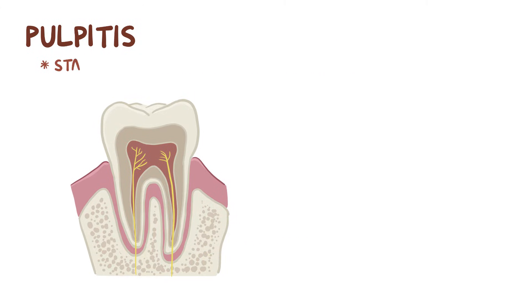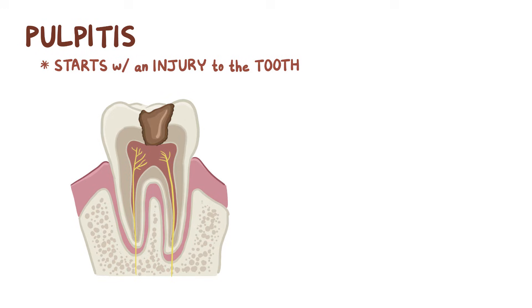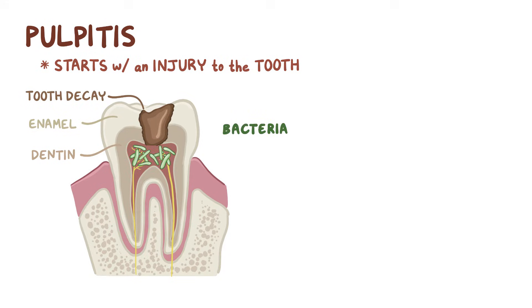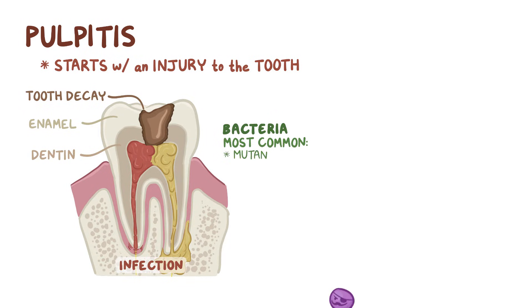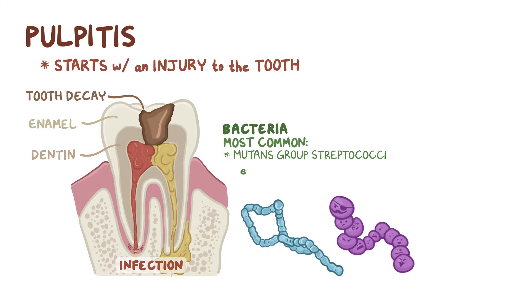Pulpitis usually starts with either an injury to the tooth, such as a fracture, or commonly from tooth decay, which is when there's erosion of the overlying enamel and dentin layers, opening up a direct route to the pulp. Bacteria can then access the dental pulp and generate an infection. The most common bacteria include the mutans group Streptococci, such as Streptococcus mutans and Streptococcus sobrinus.